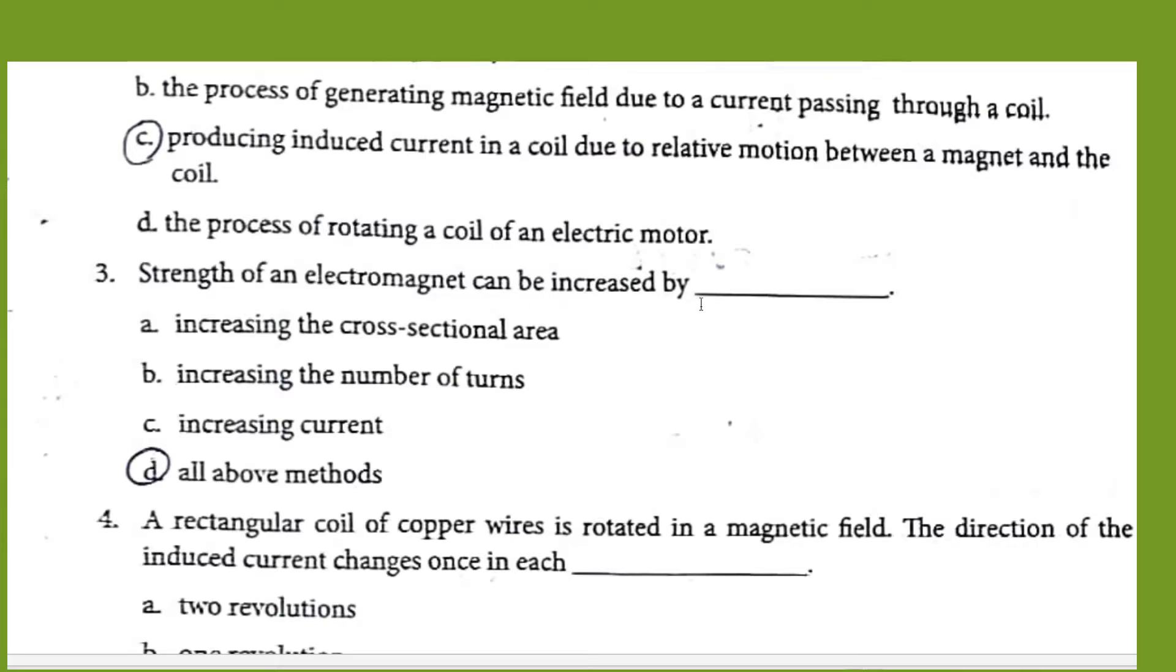Strength of an electromagnet can be increased by increasing cross sectional area, increasing the number of turns, increasing the current. All the three options are true. So you have to choose all the above methods.